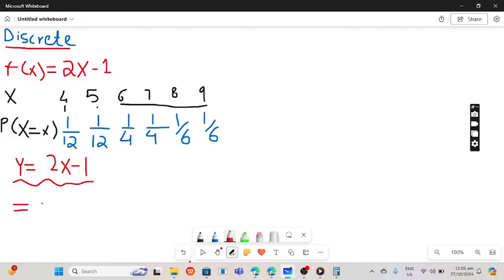Solving: 2 times 4 is 8, 8 minus 1 you get 7, multiplied by 1 by 12. Plus 2 times 5 is 10, 10 minus 1 you get 9, multiplied with 1 by 12. Plus 2 times 6 is 12, 12 minus 1 you get 11, multiplied with 1 by 4.